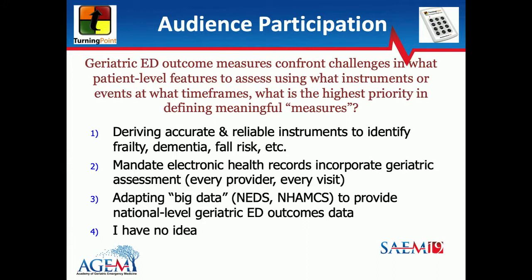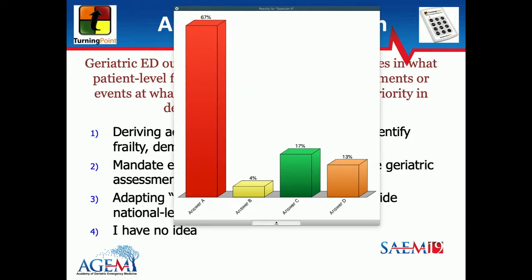Deriving accurate and reliable instruments takes precedence in this group. Just as a show of hands — how many define yourselves first as researchers? How many as clinicians first? How many as medical educators first? Mostly researchers in this room.